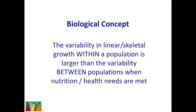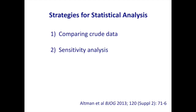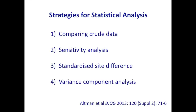The strategies for statistical analysis of how to combine data from eight sites were very carefully thought over. Doug Altman from the Centre of Statistics and Medicine here in Oxford led this part of the project. There were four main strategies: first, comparing the crude data; second, a sensitivity analysis seeing what difference subtracting any one or more sites made; third, looking at the standardised site difference — whether measurements were within half a standard deviation of the total; and fourth, a variance component analysis.